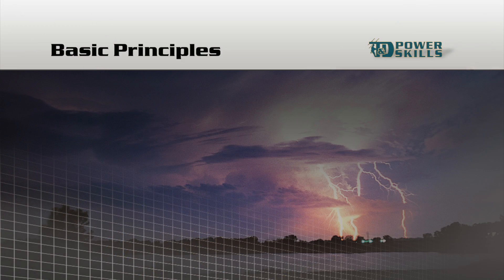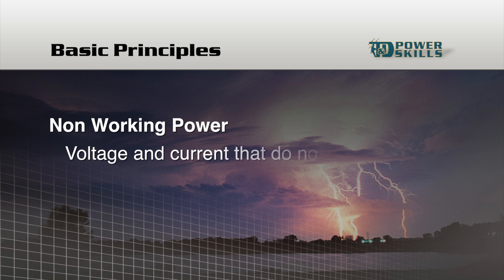However, some of the power that is produced at a power plant does not perform useful work. We'll call this power non-working power. Non-working power is voltage and current that do not perform work.